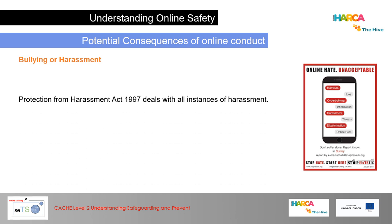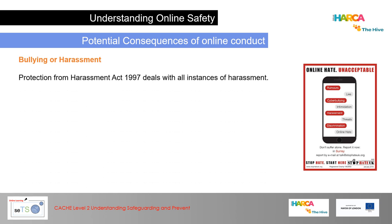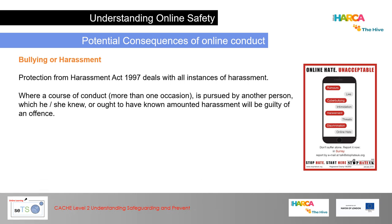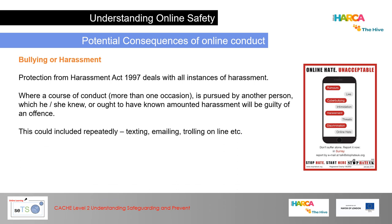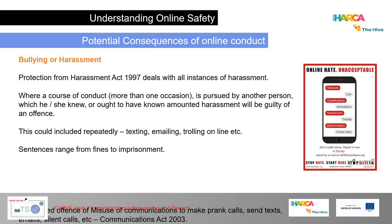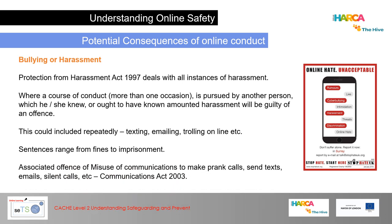Bullying or harassment — the Protection from Harassment Act 1997 deals with all instances of harassment where a course of conduct on more than one occasion is pursued by a person who knew or ought to have known it amounted to harassment. This could include repeatedly texting, emailing, trolling online and so forth. Sentences range from fines to imprisonment. Associated offences of misuse of communications — prank calls, texts, emails, silent calls — come under the Communications Act 2003.